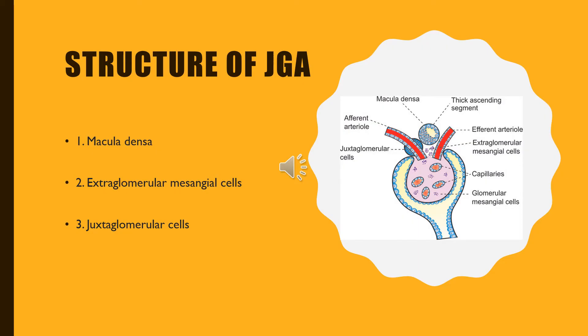Juxtaglomerular apparatus is formed by three different structures: macula densa, extraglomerular mesangial cells, and juxtaglomerular cells.